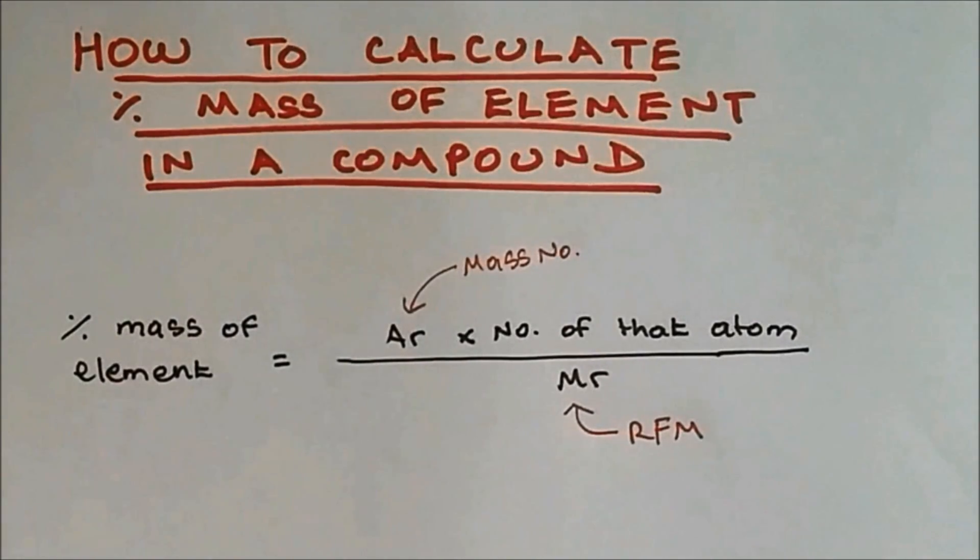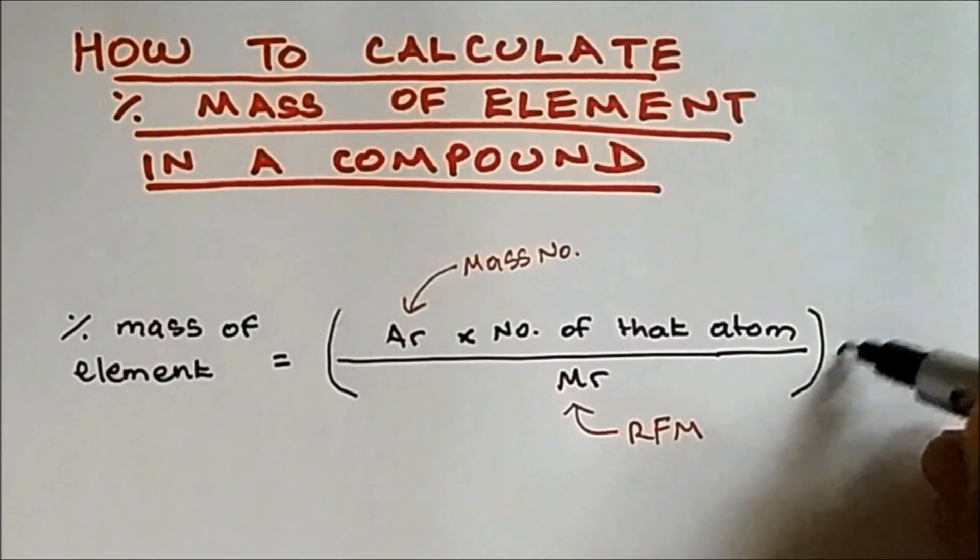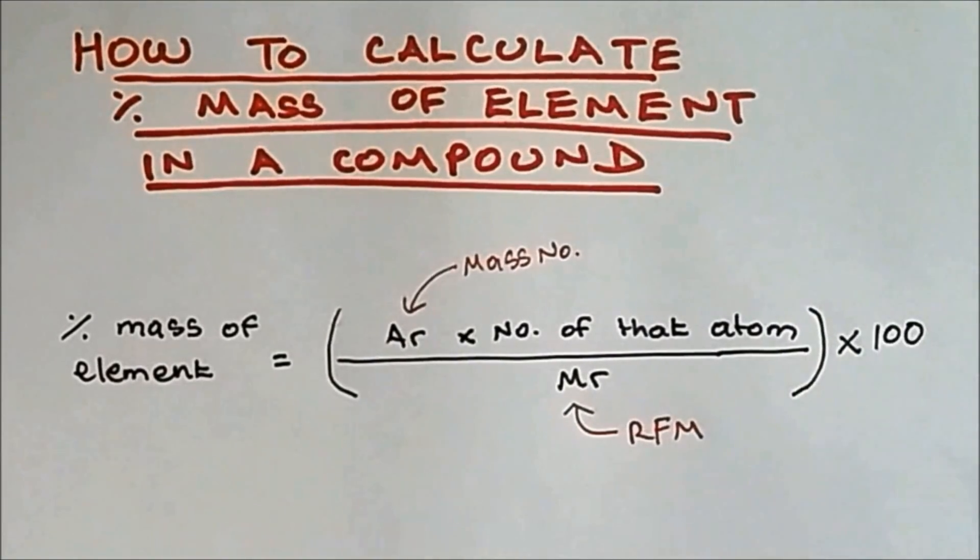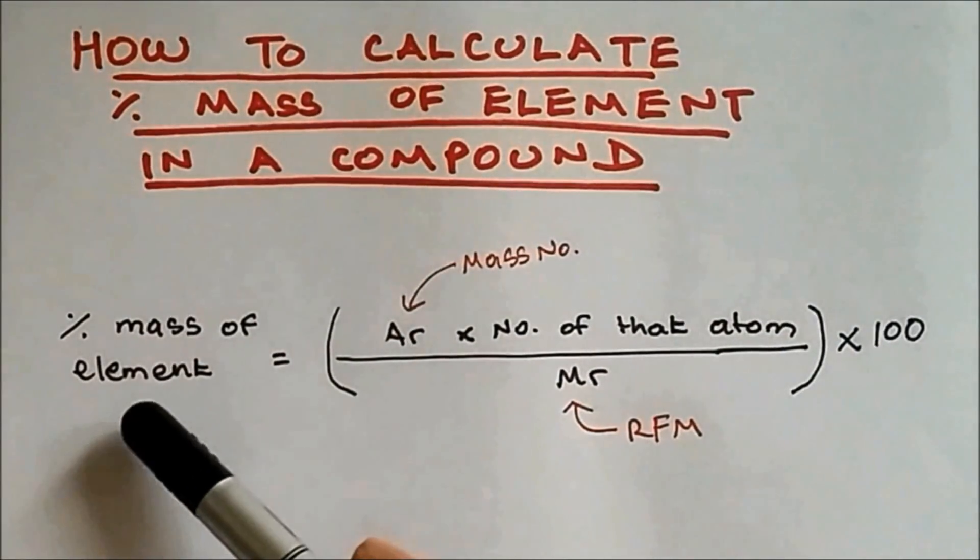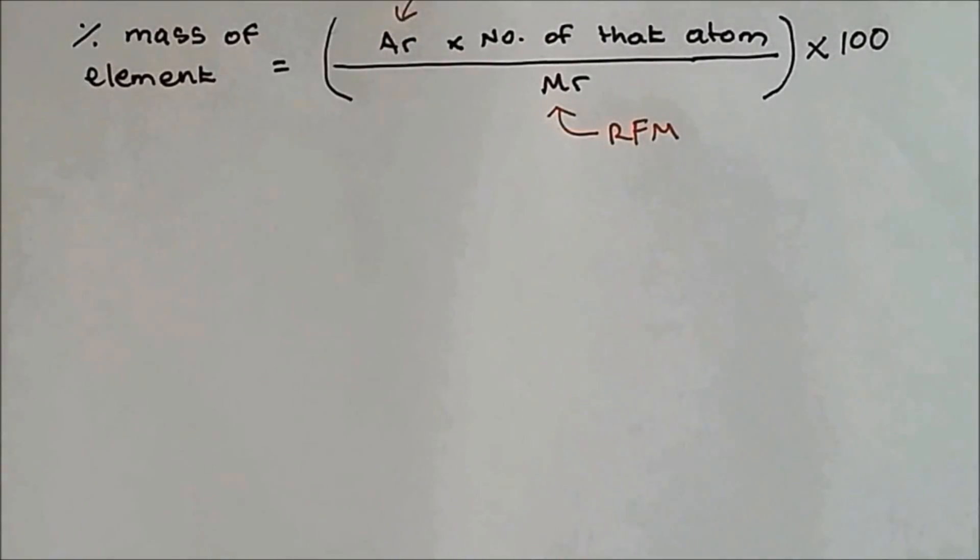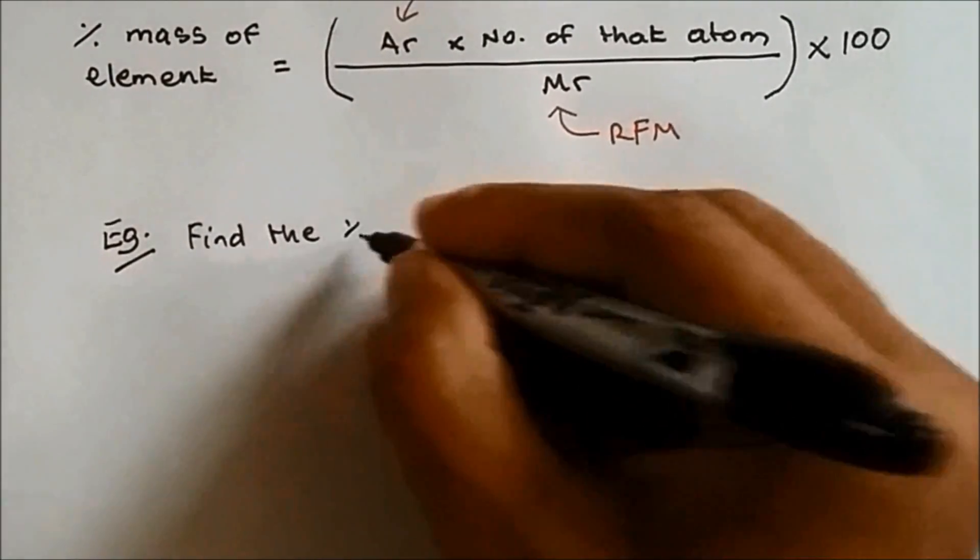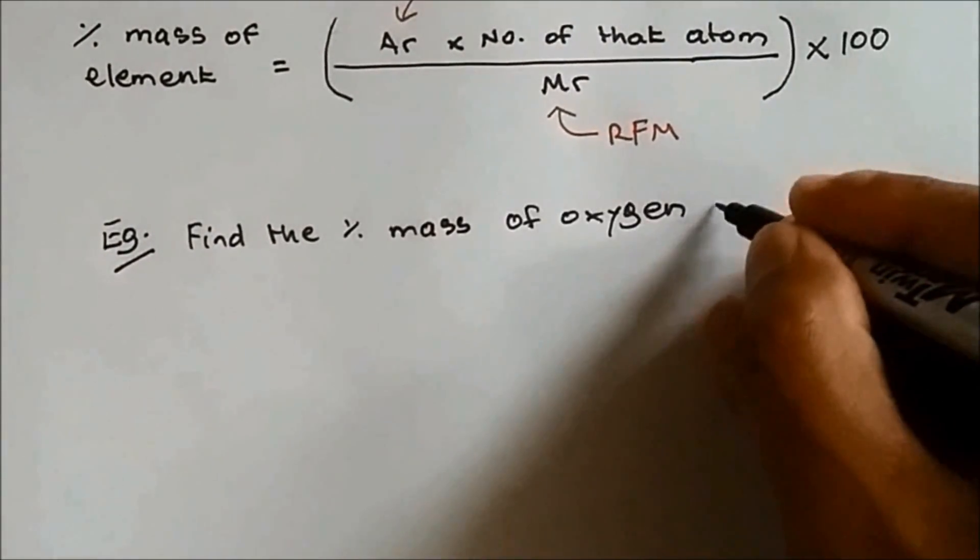Once you have applied all the calculations, you have to multiply by 100 because mass of element has to be given in percentage. So let's do an example now.